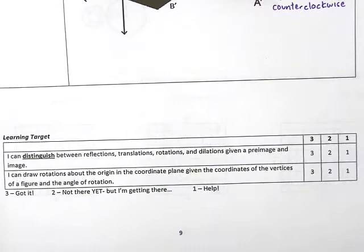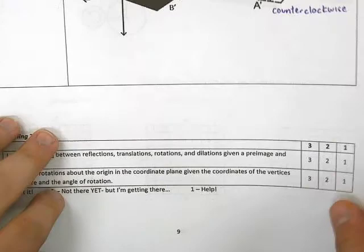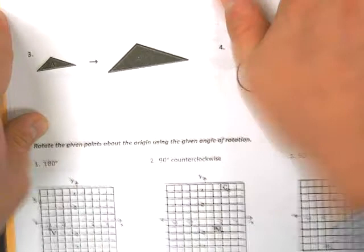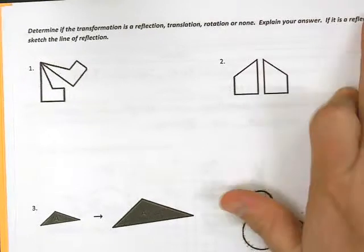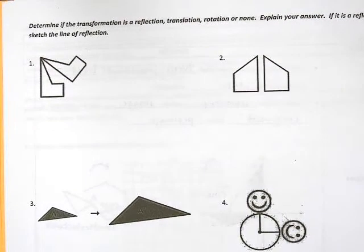We take a look at our learning targets real quick. We still want to be able to distinguish between our different types of transformations, and then really what we're going to do is can we draw rotations about the origin in a coordinate plane? That's what we're going to work on a lot today.